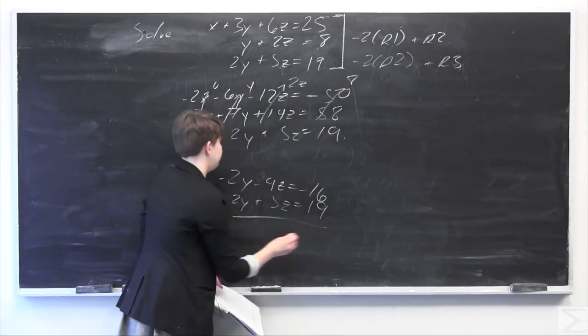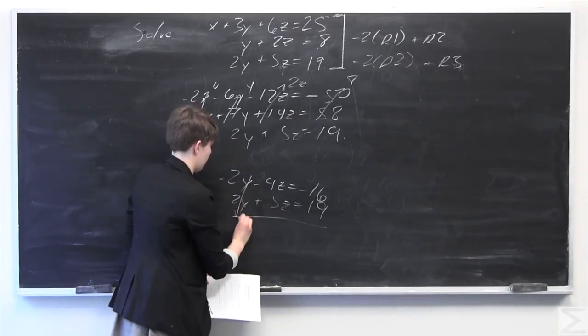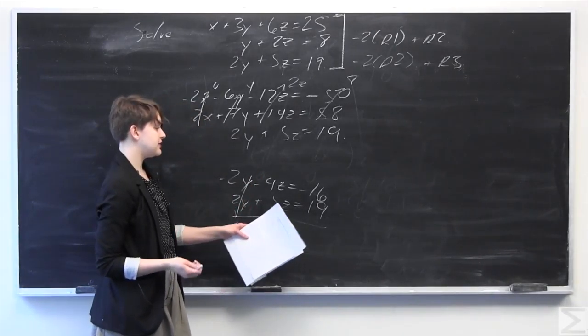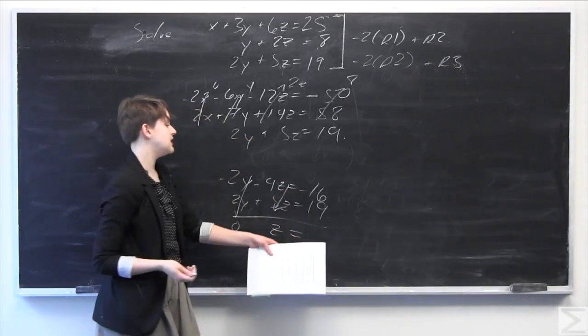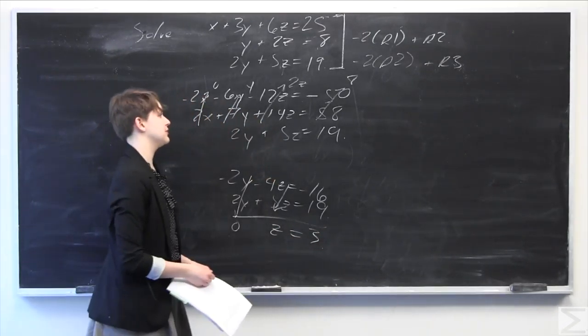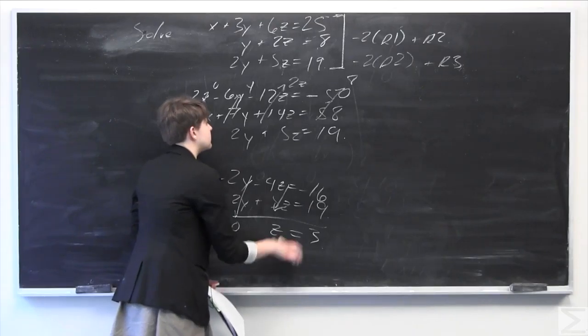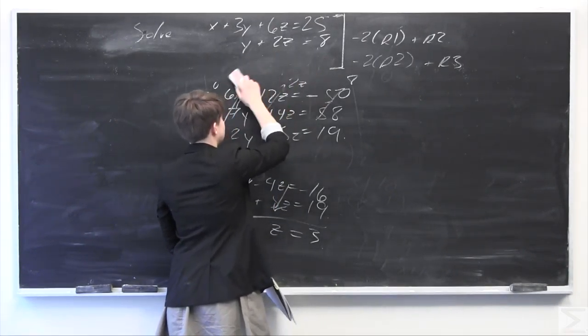Negative 2y plus 2y equals 0. 5z minus 4z equals z. And 19 minus 16 equals 3. So z equals 3. I'll replace the bottom row with z equals 3, and now we can do back substitution to solve our system.